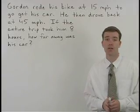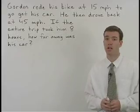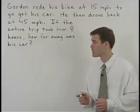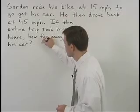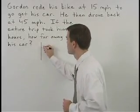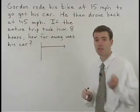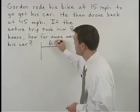Let's start by setting up a diagram just like we did in the last section so that we can visualize what's going on. First, since Gordon rides his bike to go get his car, let's start by making an arrow going to the right to represent the distance that he bikes or DB.